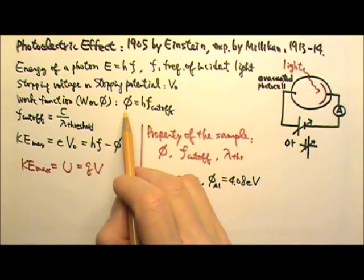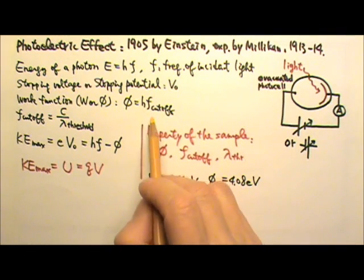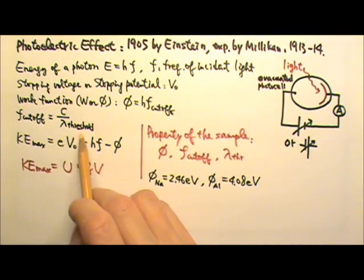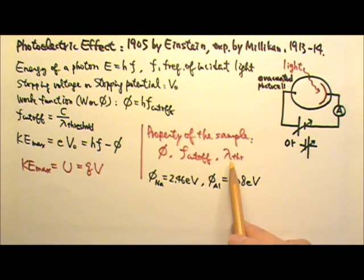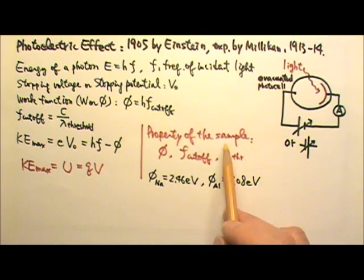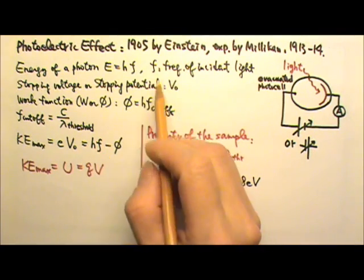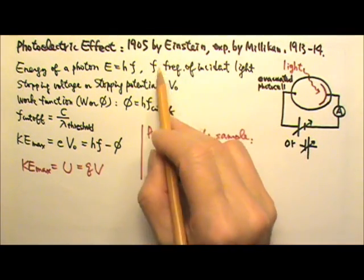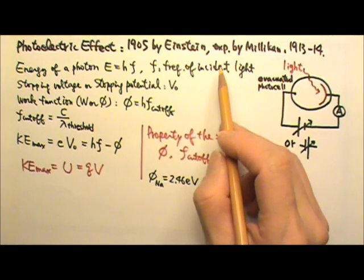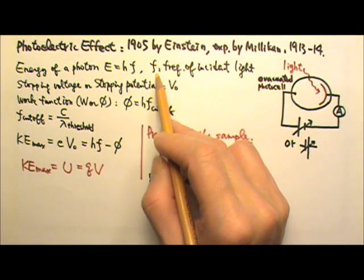Because work function decides the cutoff frequency, and therefore the threshold wavelengths, both of these also depend on the sample used. And this HF's frequency is the frequency of the actual incident light, which may or may not be the same as the cutoff frequency.